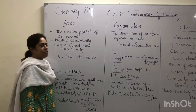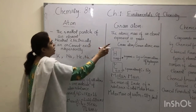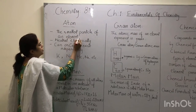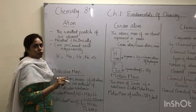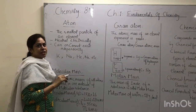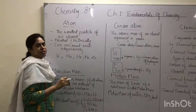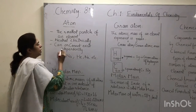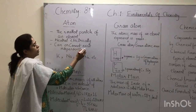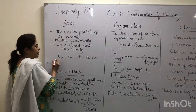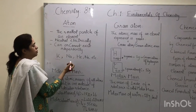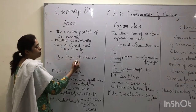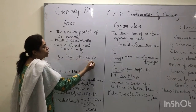Now let's see the difference between atom and gram atom. An atom is the smallest particle of an element. It is electrically neutral, meaning it carries no charge — neither positive nor negative. It can or cannot exist independently. Examples include an atom of potassium, an atom of sodium, and an atom of helium.